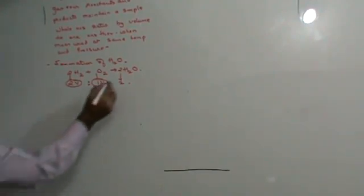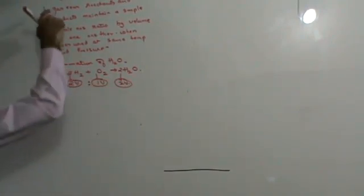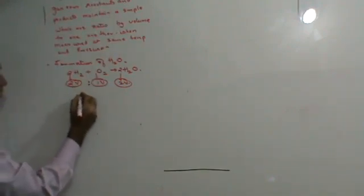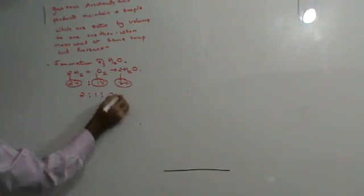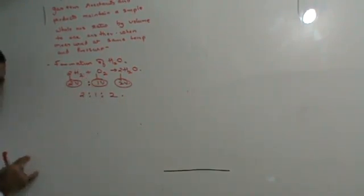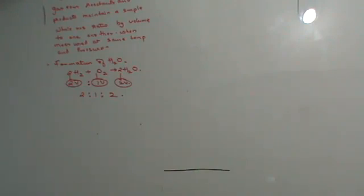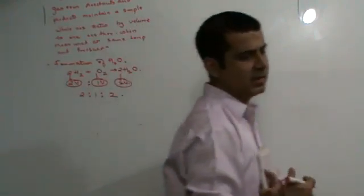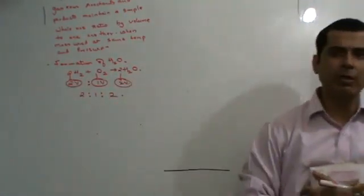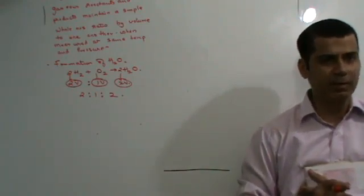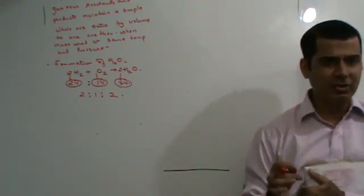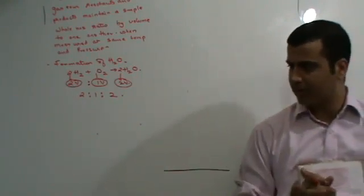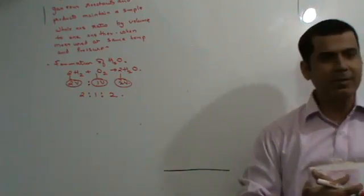Gay-Lussac's law states that whenever gaseous reactants combine with each other, they will combine in the ratio of whole numbers. You can see that if I take the product also, they said gaseous reactants and products maintain a simple whole number ratio. Here the ratio is 2:1:2. So the reactants and products maintain a ratio of whole numbers. You will never have fraction atoms combining — you will always have whole atoms, and the ratio will always be in terms of whole numbers, never decimals.